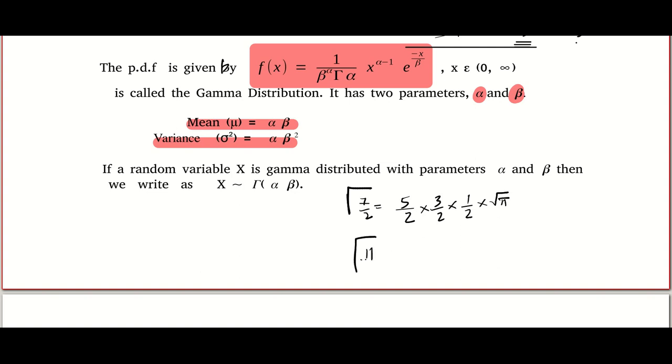Gamma 11 by 2. So, you start with 11 by 2 minus 1. Again minus 1. Again minus 1. Again minus 1. And as I promised, you will always reach 1 by 2. And after that, you put root pi. Okay, that's more than enough.